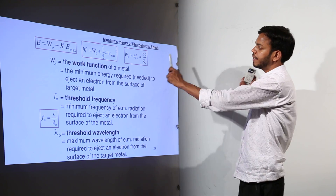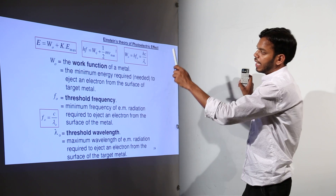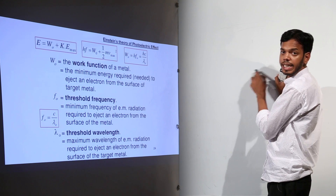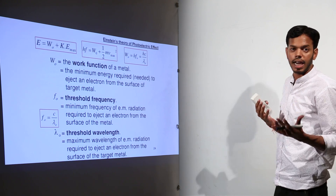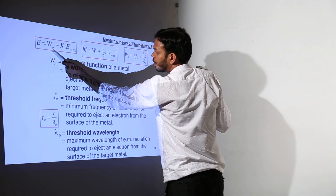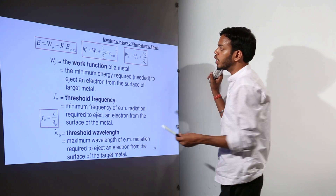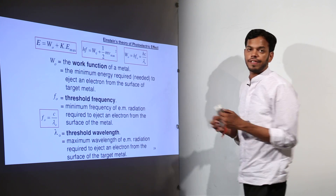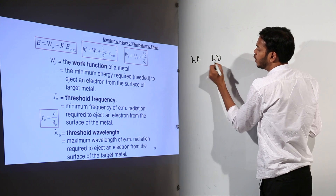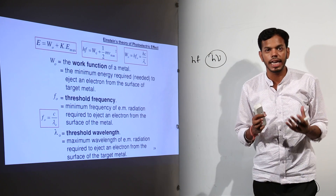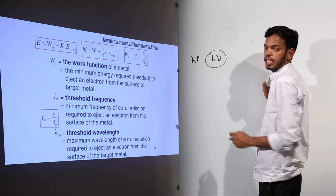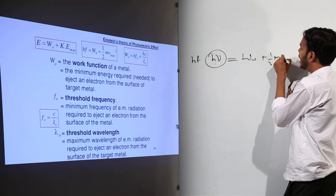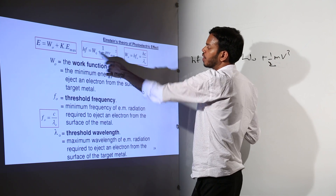Einstein's theory of the photoelectric effect states that if 100% energy comes through a photon, 10% is used for the work function and the remaining 90% becomes kinetic energy. The total energy of a photon is H-nu — where nu is the frequency of the incoming radiation and H is Planck's constant. So H-nu equals work function plus kinetic energy.